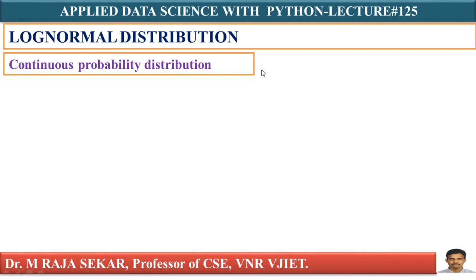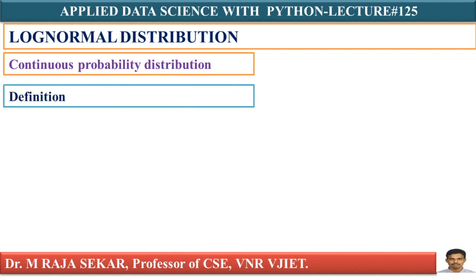In probability theory, a log normal distribution is a continuous probability distribution of a random variable whose logarithm is normally distributed. This is a very interesting distribution which occurs a lot in the real world. We will try to understand the definition of log normal distribution.